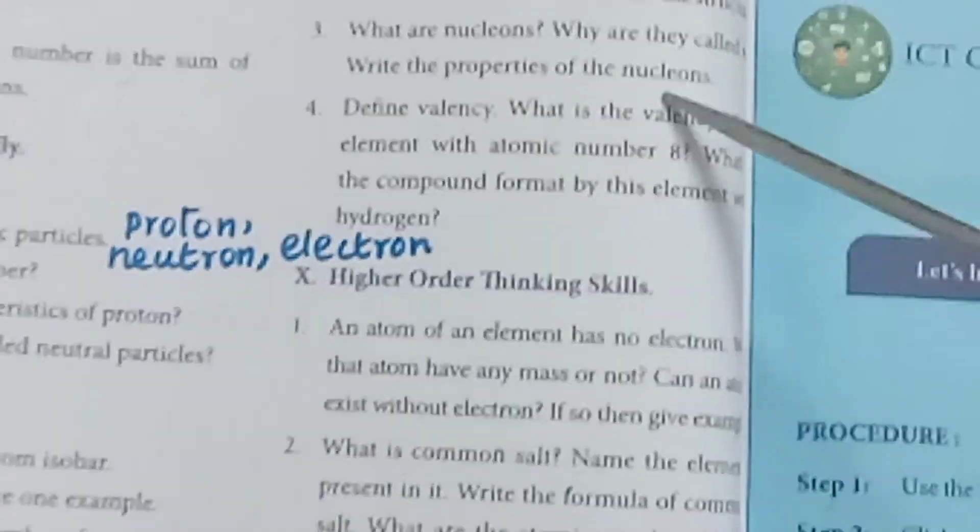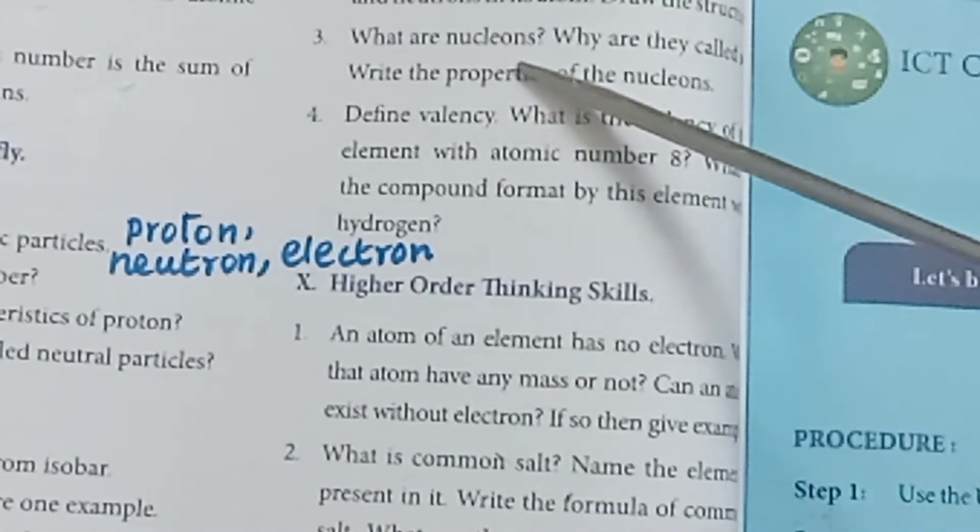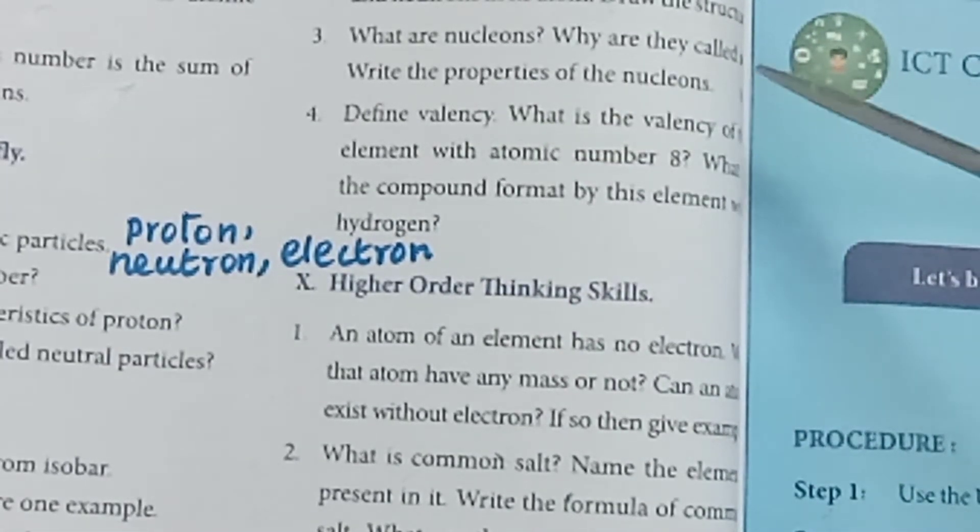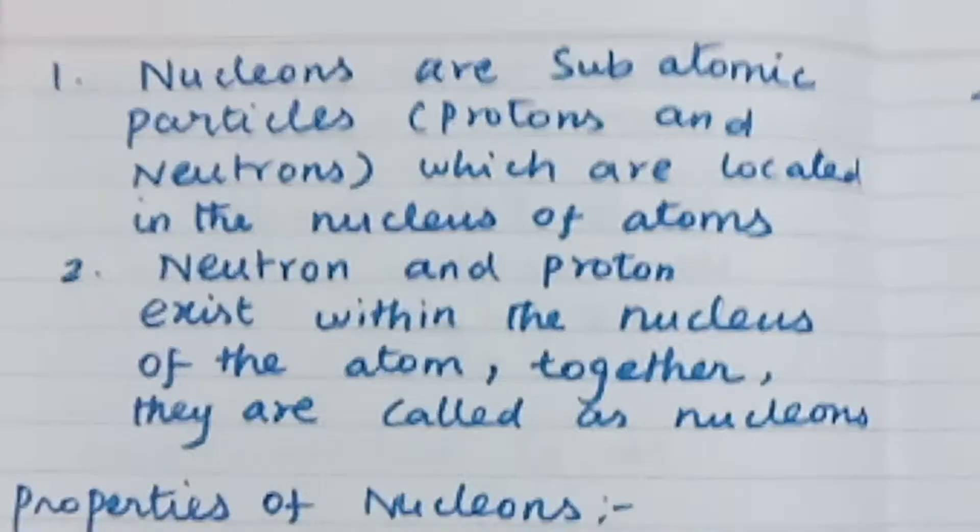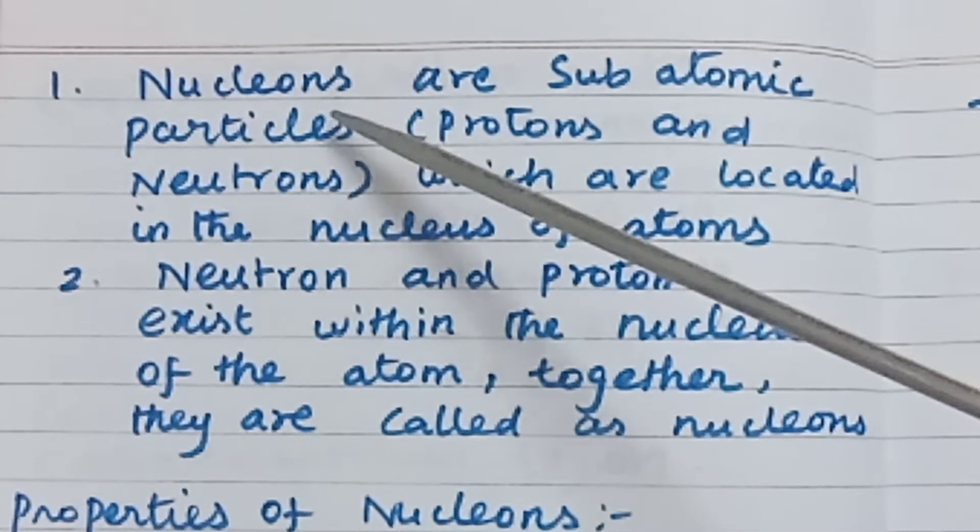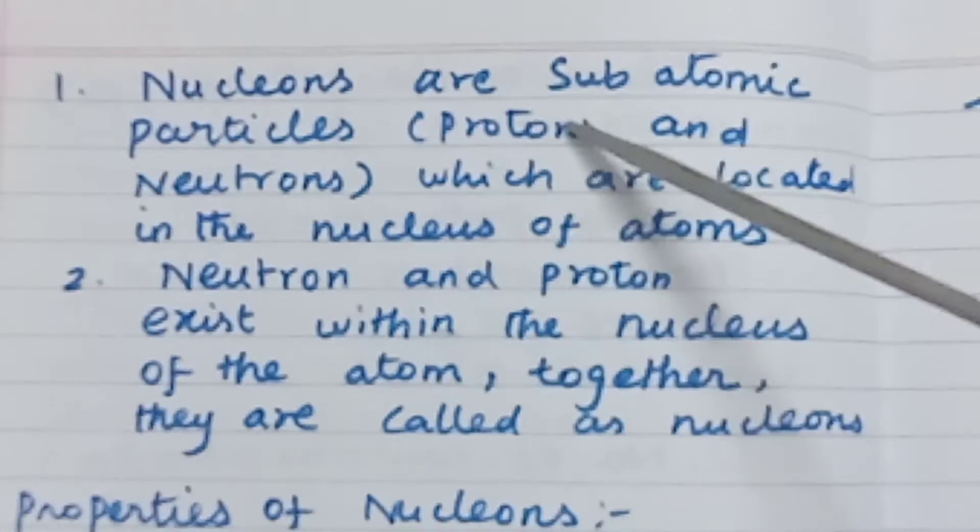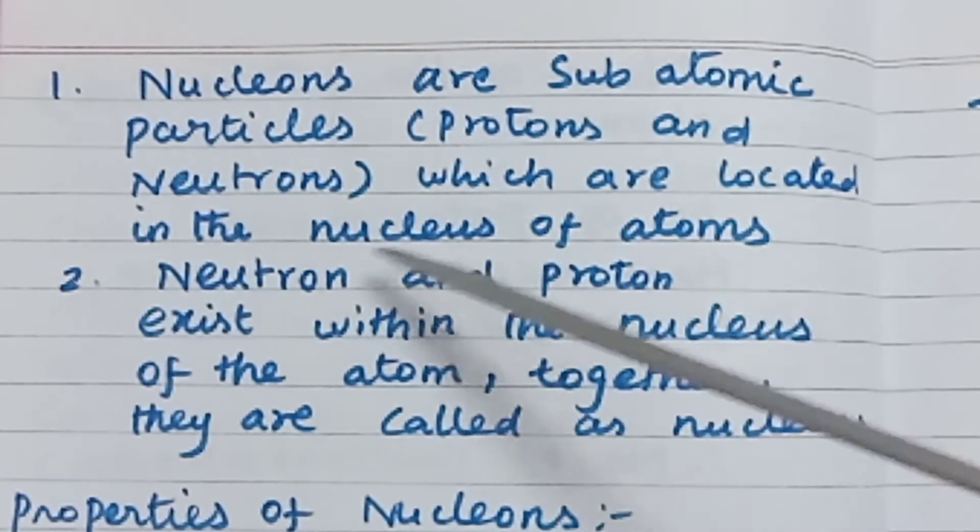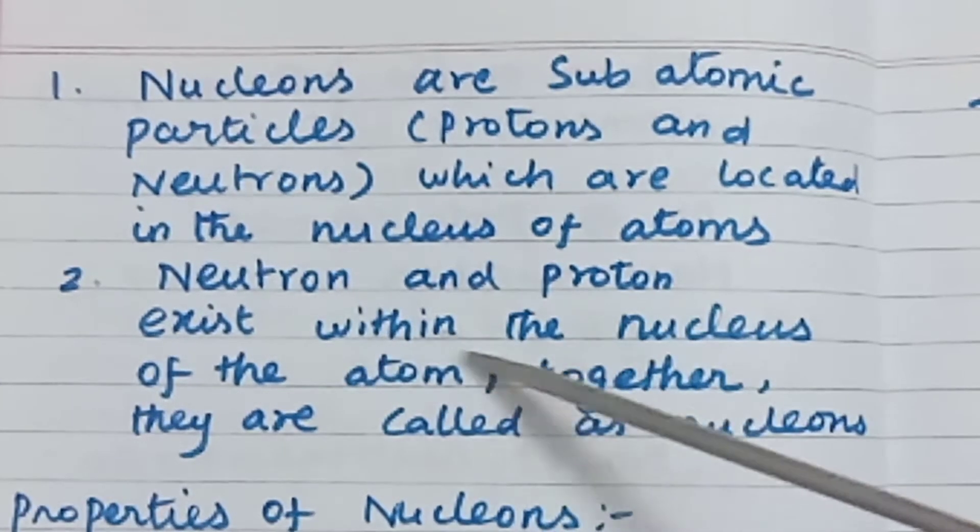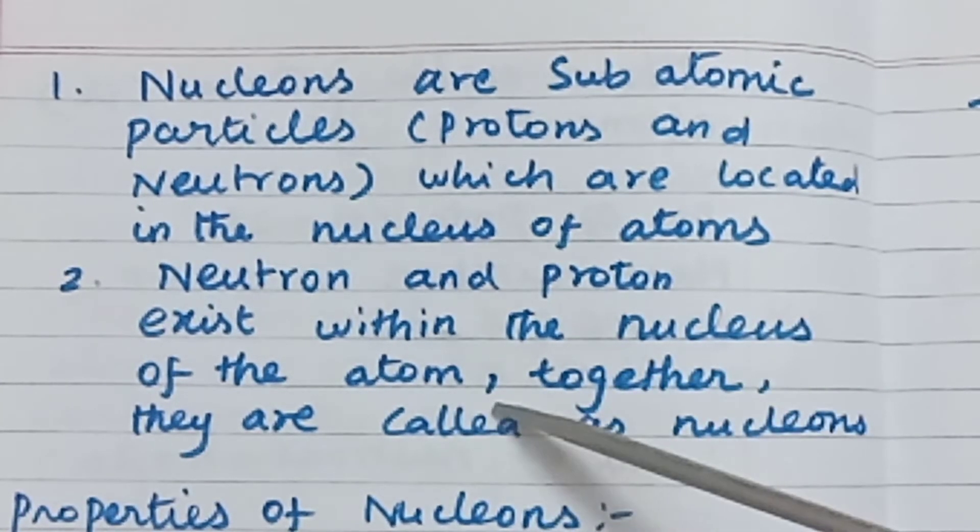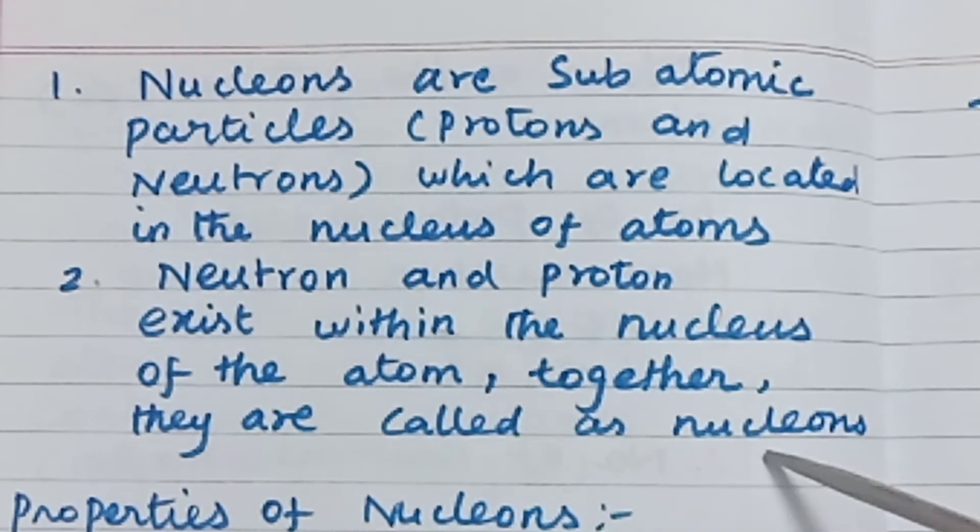Third question: What are nucleons? Why are they called so? Write the properties of nucleons. Nucleons are subatomic particles - protons and neutrons - which are located in the nucleus of atoms. Neutrons and protons exist within the nucleus of the atom. Together they are called nucleons.